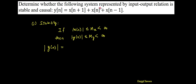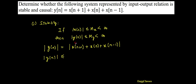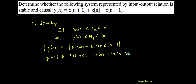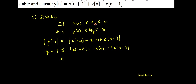...x(n+1) + x(n) + x(n-1). So consider the magnitude of x(n+1) + x(n) + x(n-1). Simplifying further, the magnitude of y(n) is less than or equal to — since the magnitude of a sum is less than or equal to the sum of magnitudes — the magnitude of x(n+1) plus the magnitude of x(n) plus the magnitude of x(n-1). Therefore, this is less than or equal to: the magnitude of x(n) is less than or equal to mx.